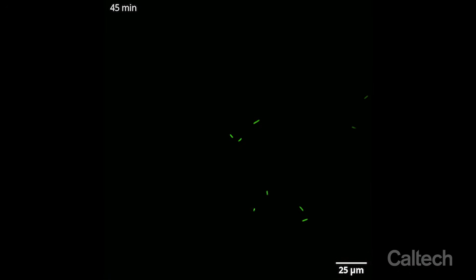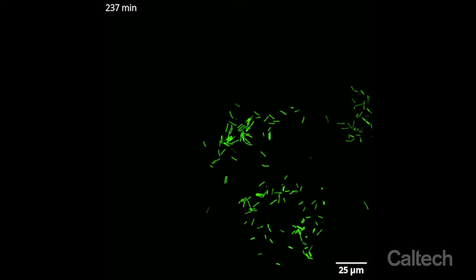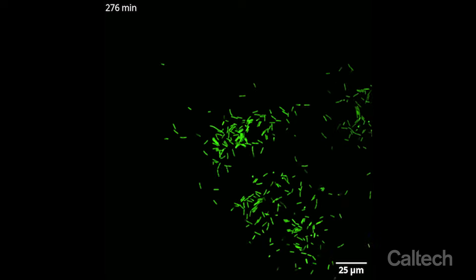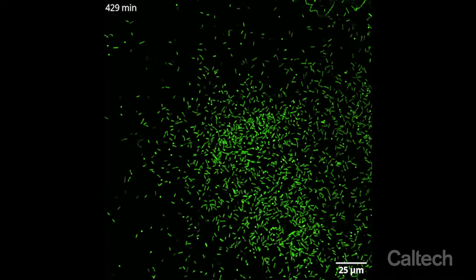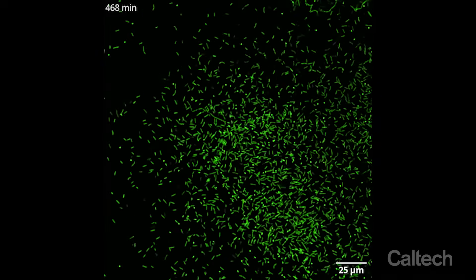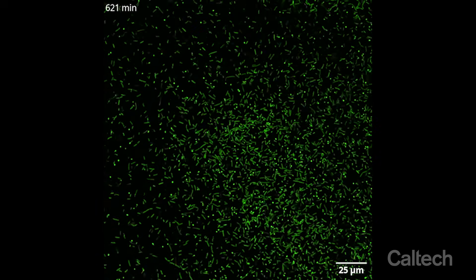The overarching goal of our research is to understand how inhabiting more complex spaces changes how bacteria behave, how they move, how they grow. In polymer-free environments, the cells are growing, they divide, and then they just randomly diffuse away, so they form a kind of random dispersion.